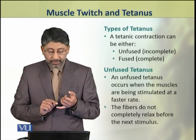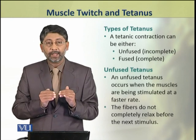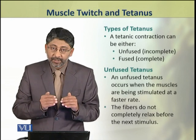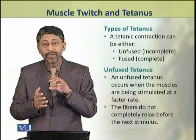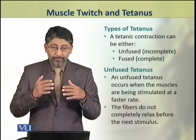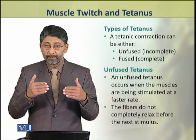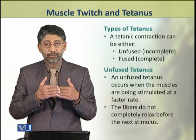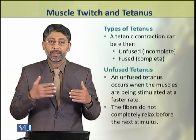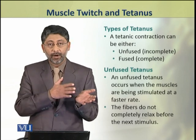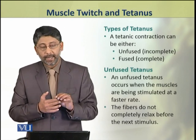An unfused tetanus occurs when the muscle is being stimulated at a relatively faster rate, so the fibers do not completely relax between the effects of two stimuli. One stimulus arrives and contraction occurs; before complete relaxation, a second stimulus arrives, so the muscle does not fully relax and contracts again — remaining more in the contraction state. This is called unfused or incomplete tetanus.